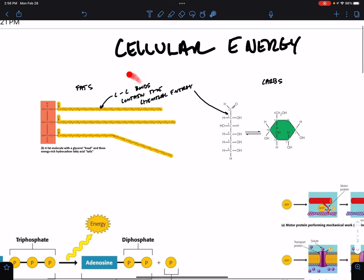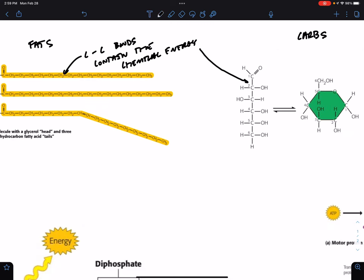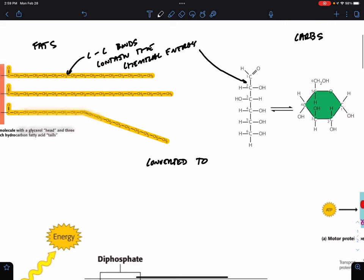When we break those bonds, the chemical energy is released. And while we use fats and carbohydrates for long-term and short-term energy storage, both of these two things are converted to chemical energy in another form: ATP.